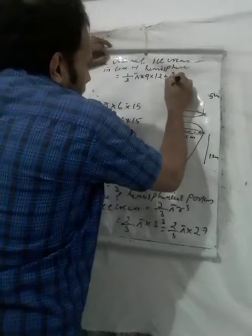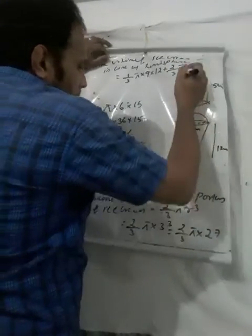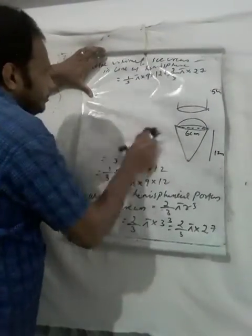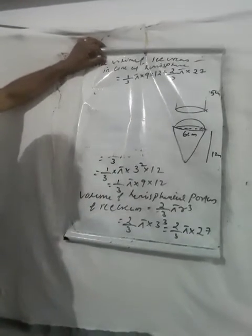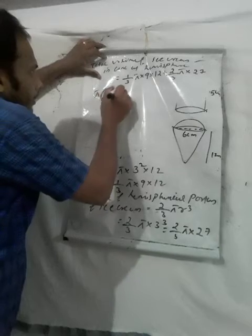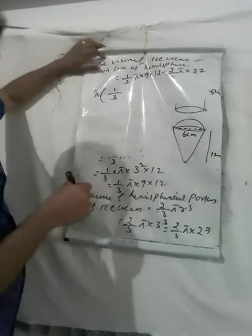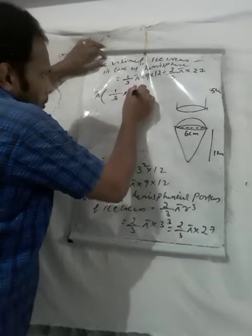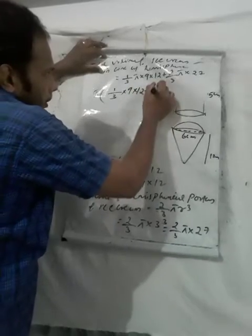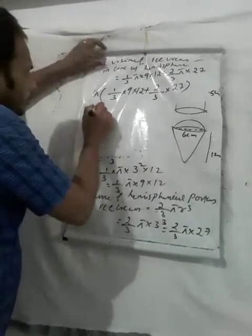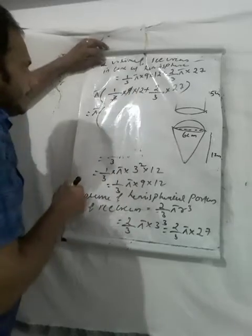Total volume of ice cream in conical portion and hemispherical portion equals one-third π into 9 into 12 plus two-thirds π into 27. The common factor is π and one-third, so we take π into one-third as common: π into one-third into 9 into 12 plus two-thirds π into 27.